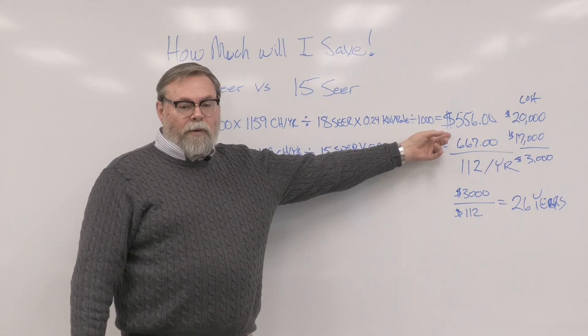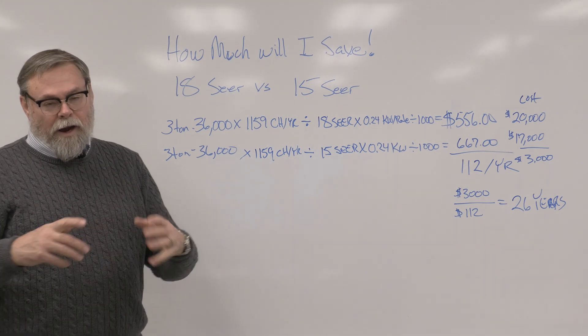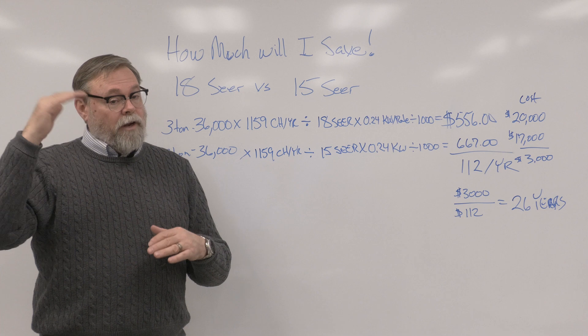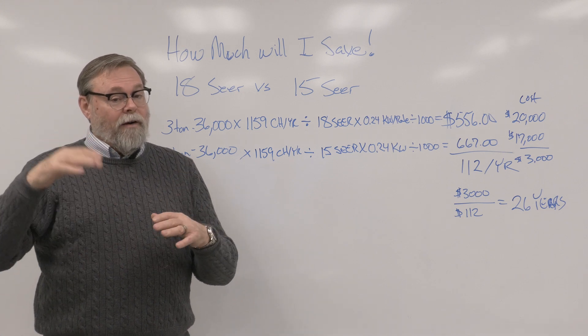And then, we come up with $556 per year on average this system should cost to run. Now, if it's a hot year, it's going to be higher. And if you like to crank your air conditioner down, it's going to be higher also.